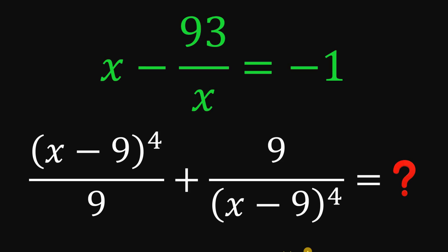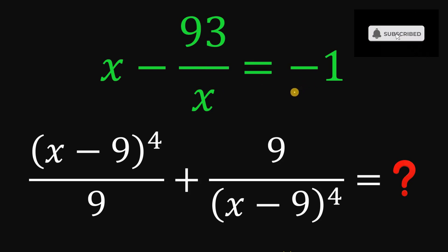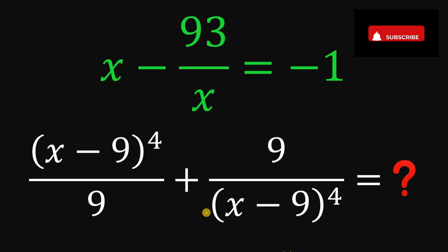Can you solve this math challenge? Here's the question: given x minus 93 over x equals negative 1, the goal is to find the numerical value of the expression x minus 9 raised to the fourth power, all over 9, plus 9 over x minus 9 raised to the fourth power.